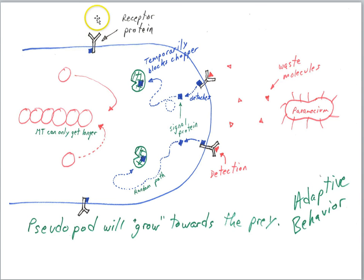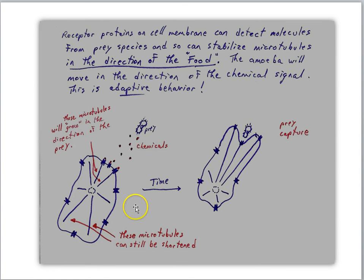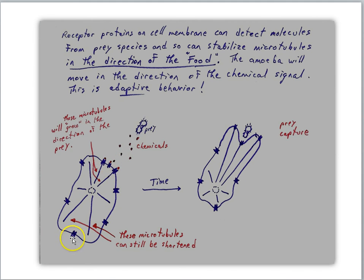Notice this protein over here is not currently detecting the chemical, so it still has its little second messenger. In summary, the interaction of three different kinds of proteins can help us understand adaptive movement in amoeba. The chemicals are being detected by receptor proteins closest to the prey, so those microtubules get longer while the ones on the other side are shortened — and the result is the amoeba moves towards its prey.